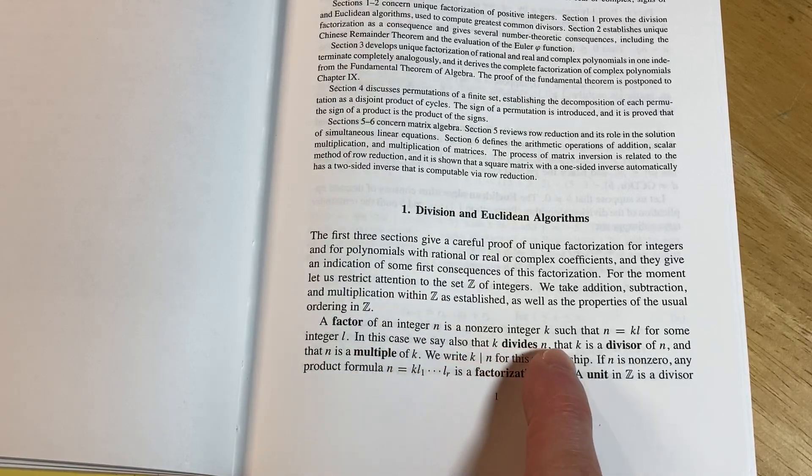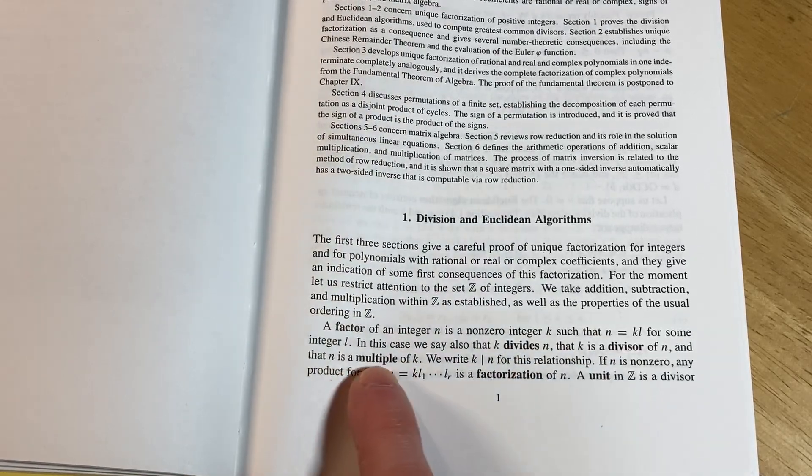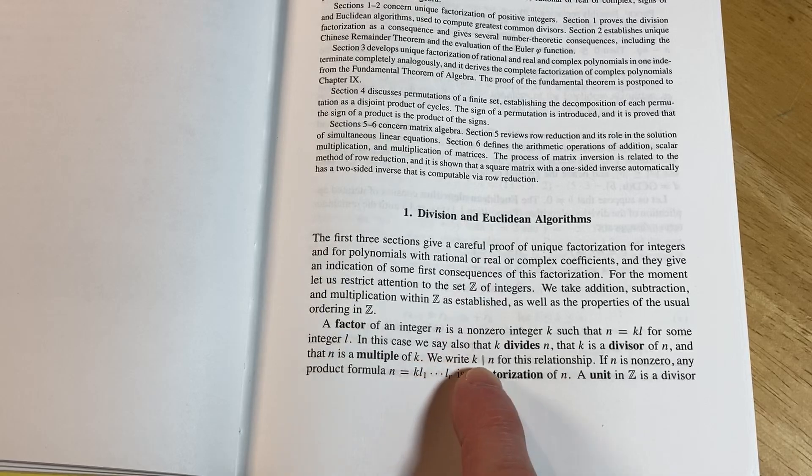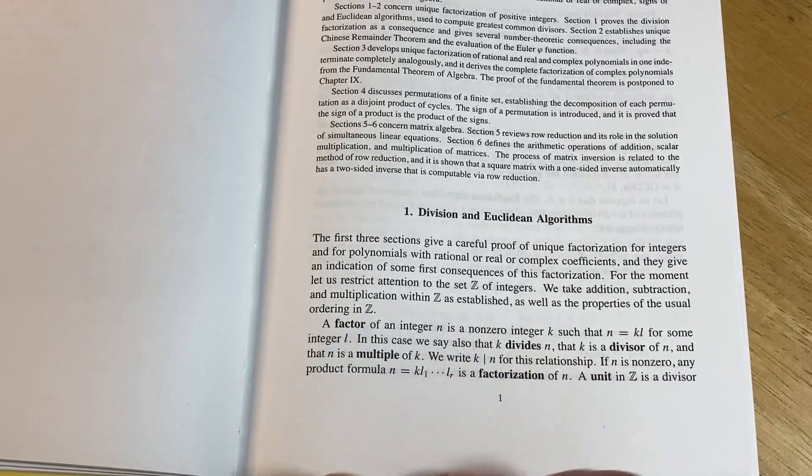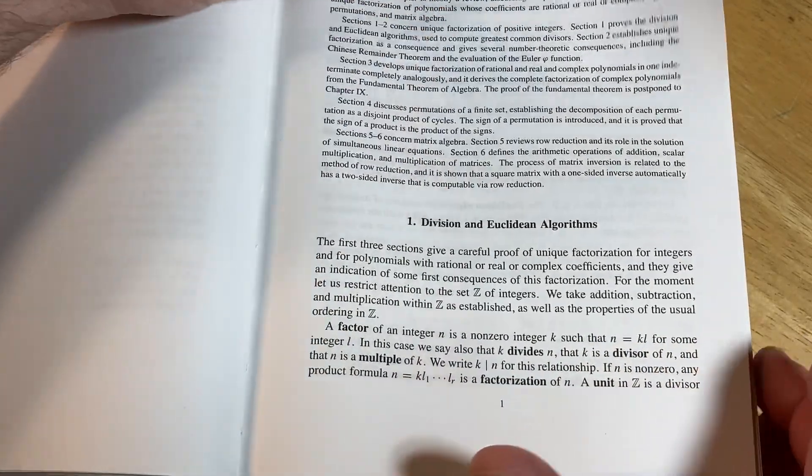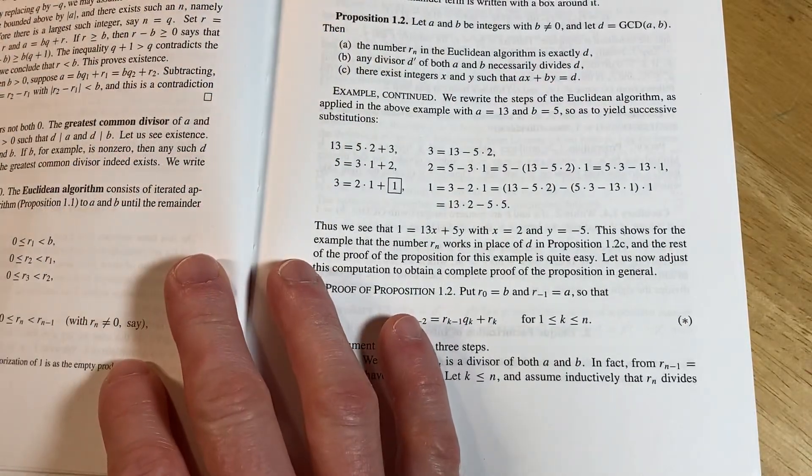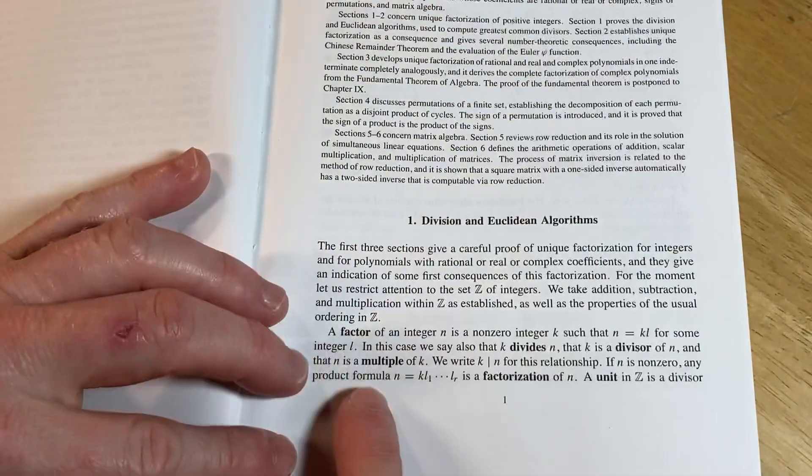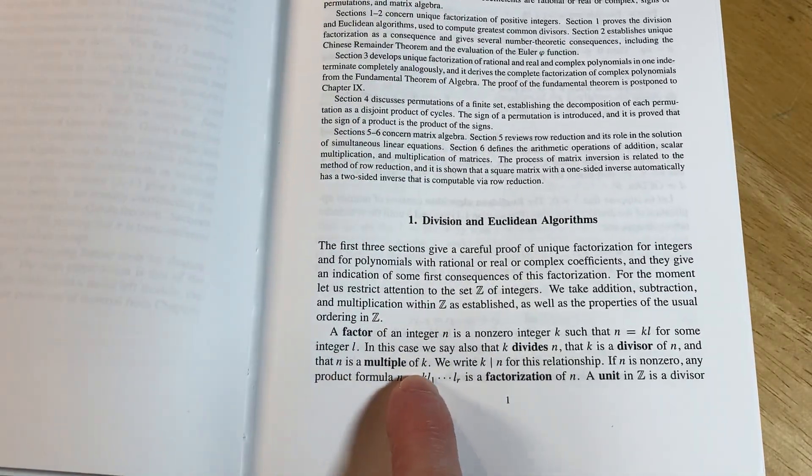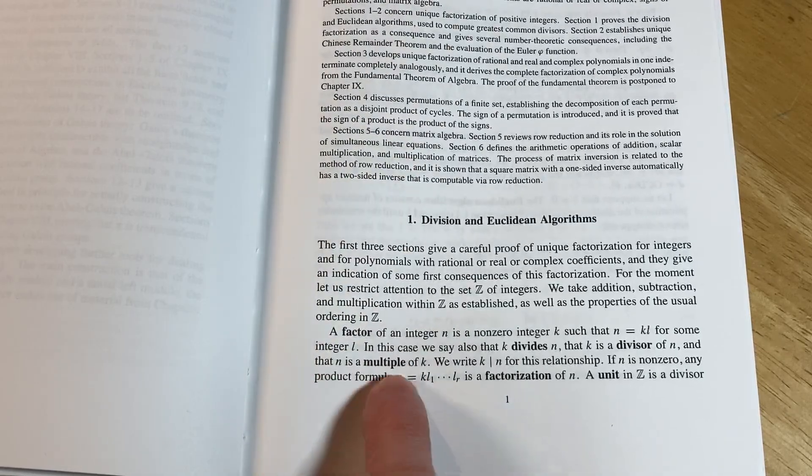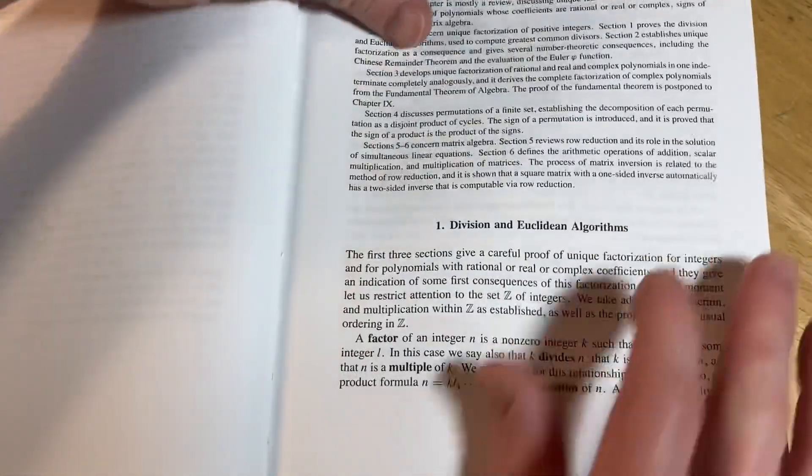In this case we say that k divides n, that k is a divisor of n, and that n is a multiple of k. We write k divides n for this relationship. Very useful to be able to think of it different ways. In particular, "n is a multiple of k"—I like thinking of it that way for the proofs because you can write the proofs a little bit easier.